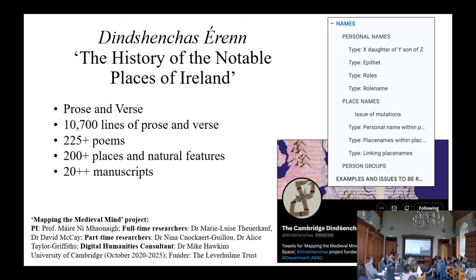These are all questions that I've been asking myself while tagging Dinnshenchas texts, but nobody's been able to answer these yet because the texts have not been edited or marked up in full, and the situation is the same for the Acallam. This kind of markup would thus facilitate new research into the role that place names play within the Acallam and Dinnshenchas alike, and of course also research on the mass takes of history.